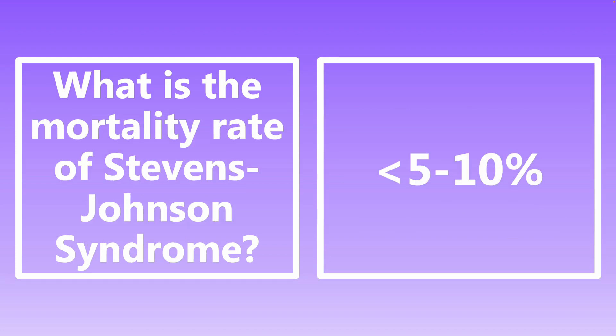What is the mortality rate of Stevens-Johnson syndrome? It's somewhere around less than 5 to 10 percent. Stevens-Johnson syndrome is a hypersensitivity reaction to various drugs, involving about 10 to 15 percent of the total body surface area. Because the course is generally milder, the mortality rate is lower — around 5 to 10 percent or less.